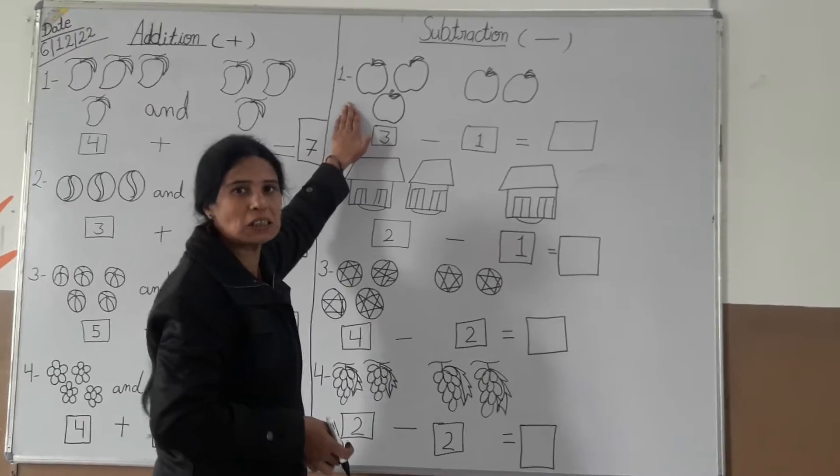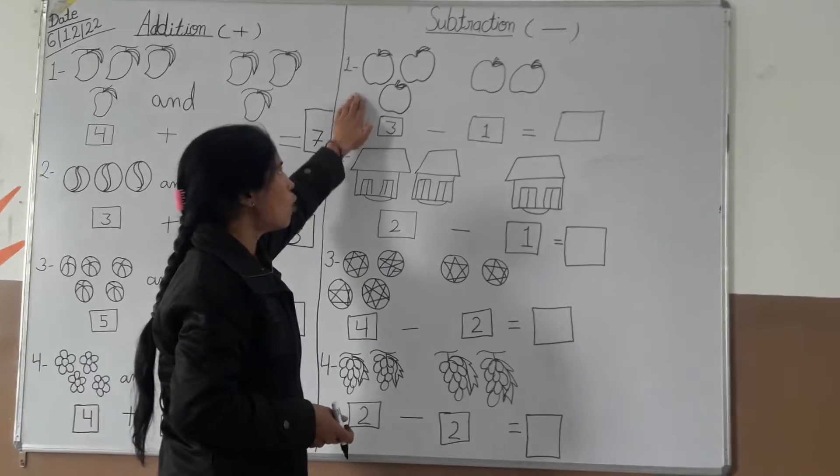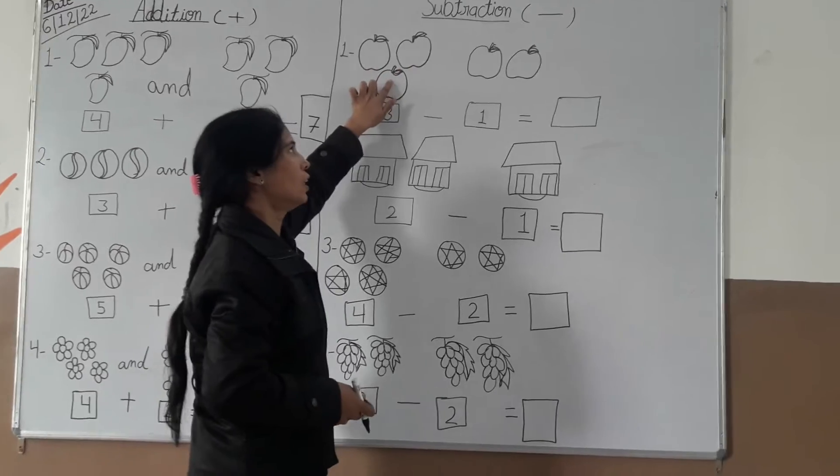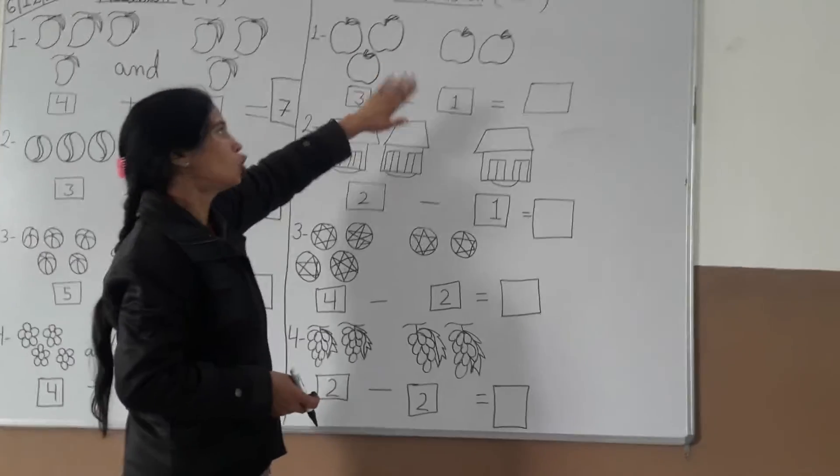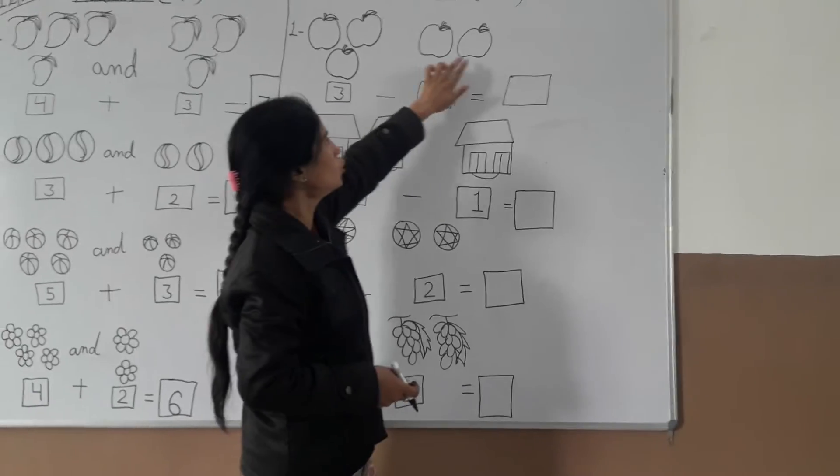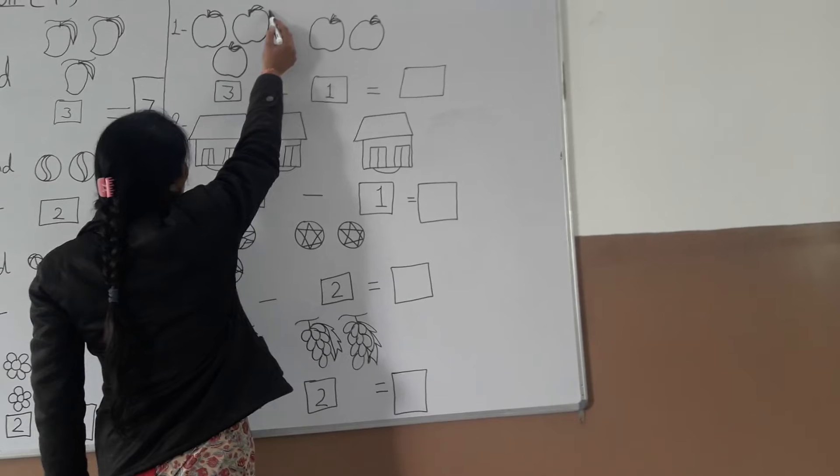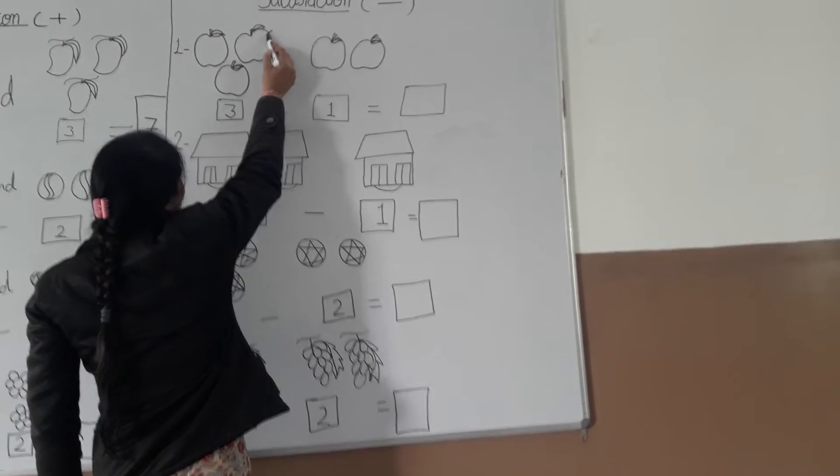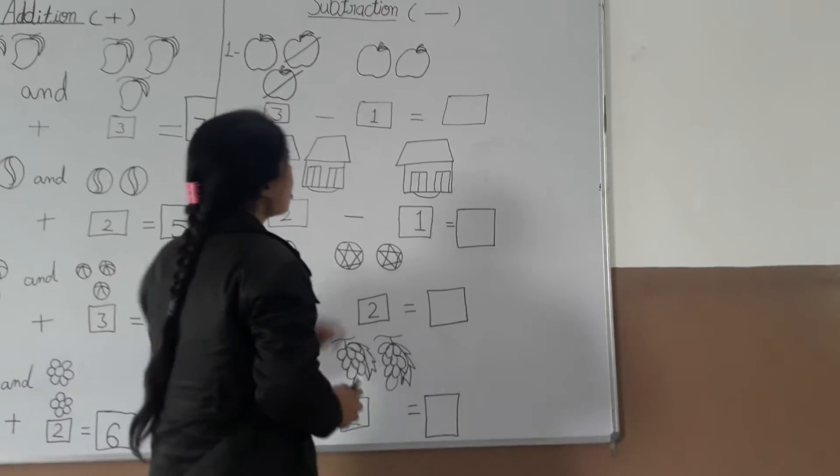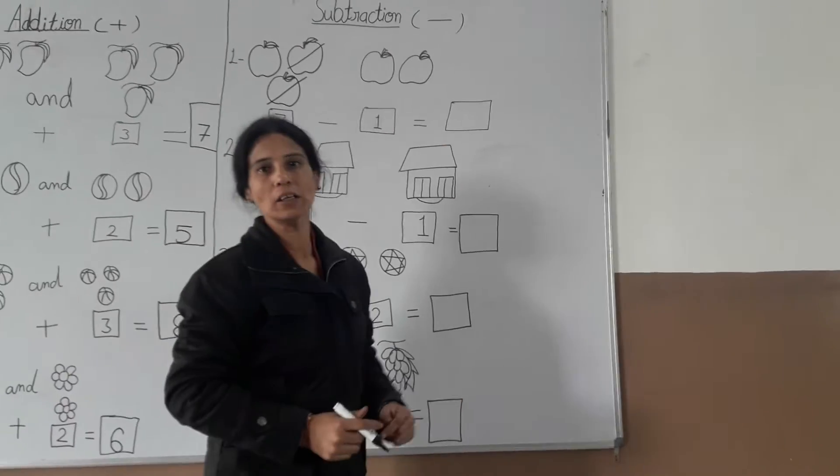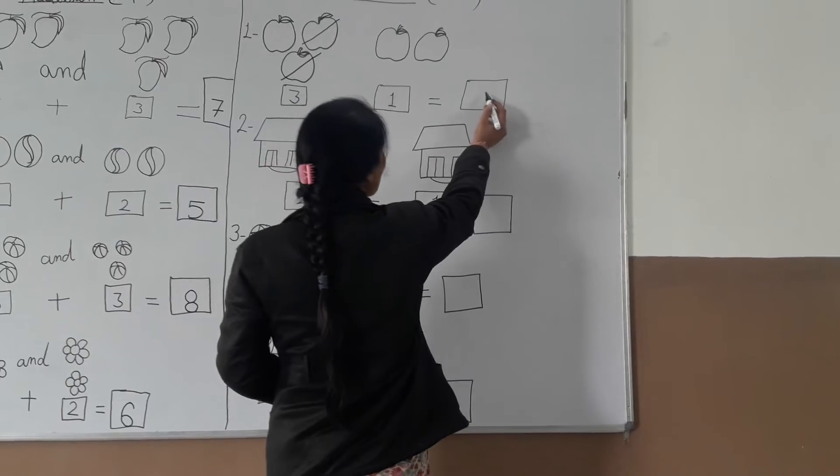What is this? Objects. Counting: one, two, three. Three. Minus two: one, two. Cross out one, two. So we have left only one.